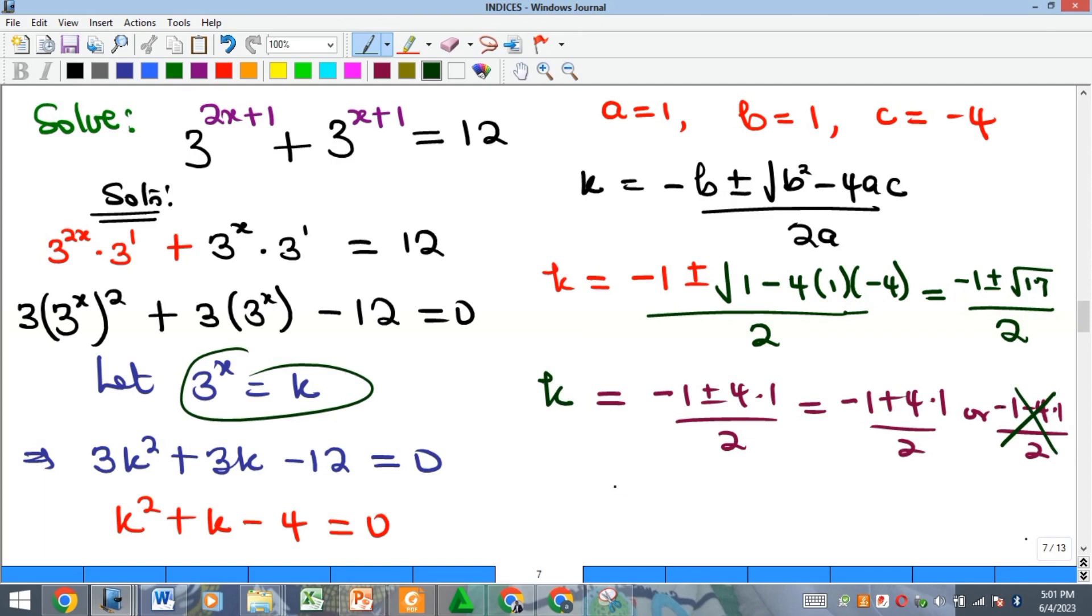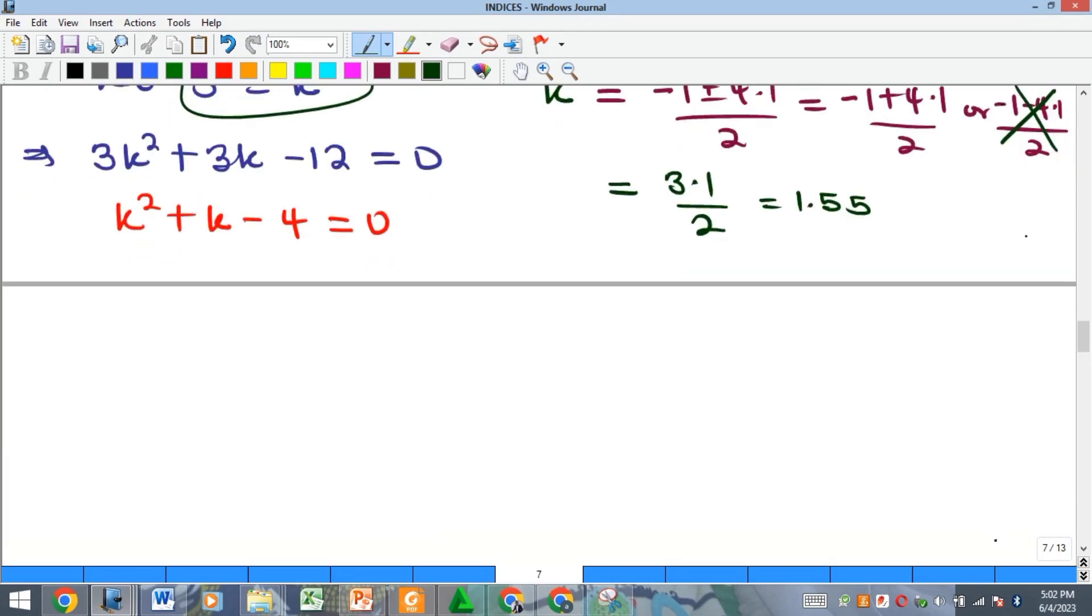So that means that our k is equal to this first one, right? So and if we add up that, minus 1 plus 4.1 will give us 3.1 all over 2, which is approximately 1.55.